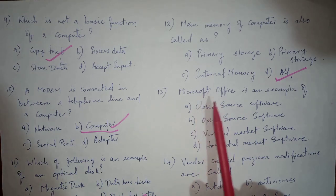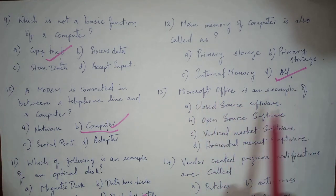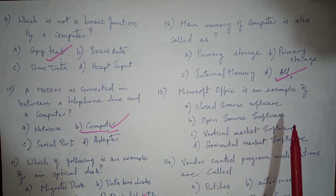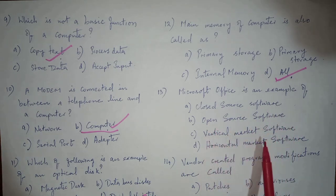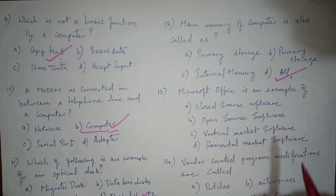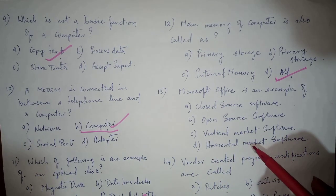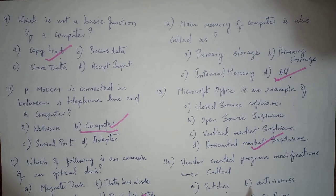Next question is: Microsoft Office is an example of closed source software, open source software, vertical market software, or horizontal market software. And the answer is horizontal market software.